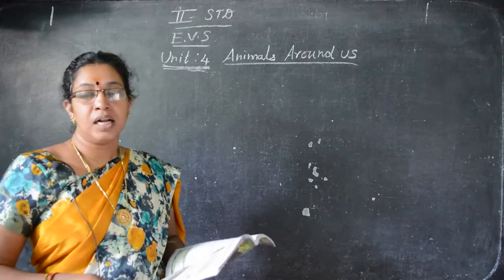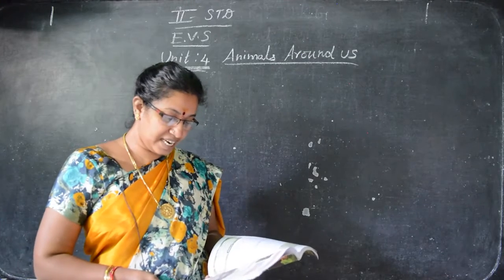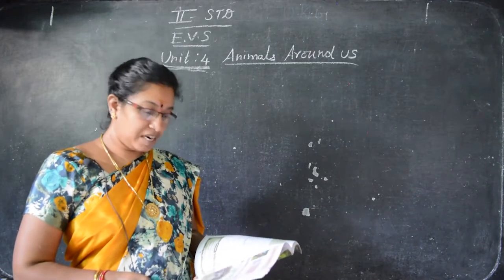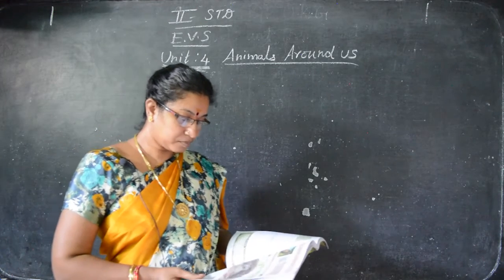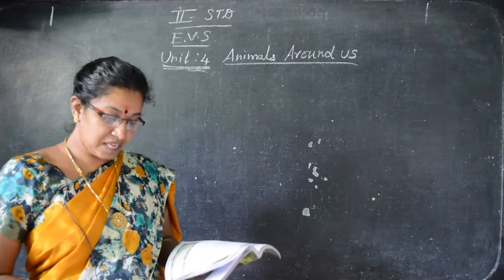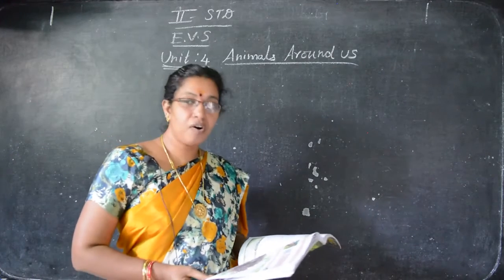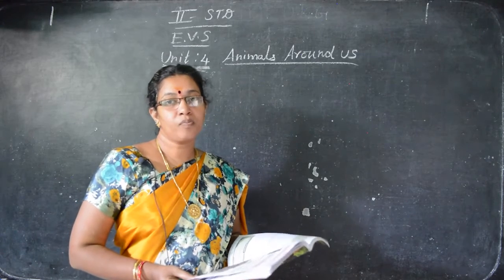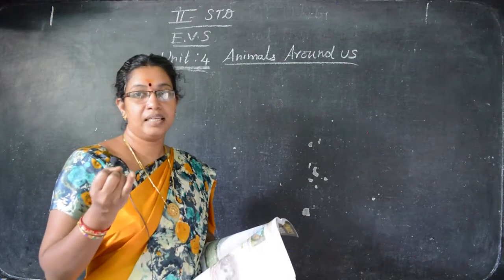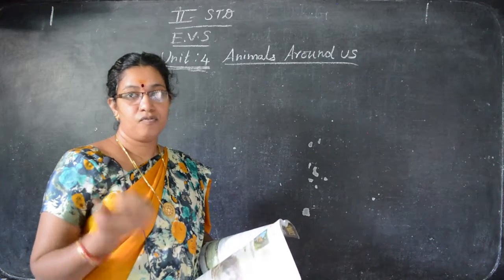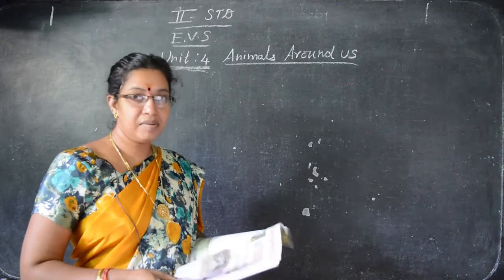Some animals live on farms and in homes — they are called domestic animals. Some live in forests; those are wild animals. Can you name some wild animals? Lion, tiger, giraffe, bear, fox — all wild animals. And some animals live in water.